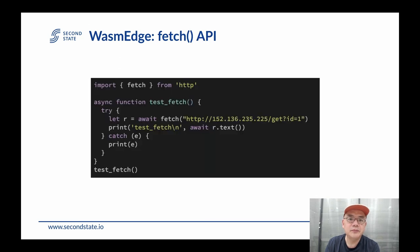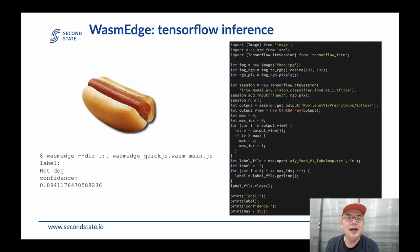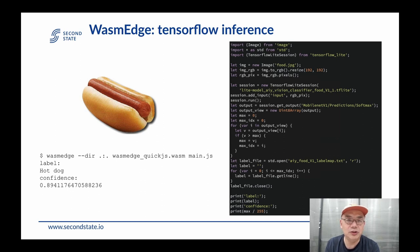Along the same lines, we support the Fetch API and HTTP requests. WasmEdge also provides extensions for TensorFlow and OpenVINO, meaning you can write AI inference applications in Rust, compile them into WebAssembly, and run them inside WasmEdge using GPU or other hardware for inference. Because this is a Rust API, we can also expose it as a JavaScript API using the same technique — here is an example JavaScript application running inside WasmEdge that uses the TensorFlow extension.